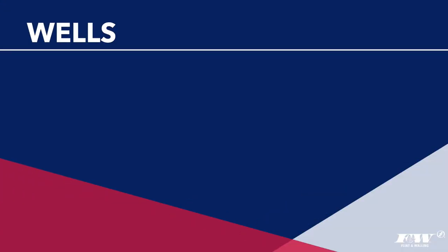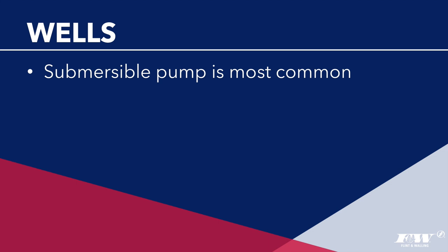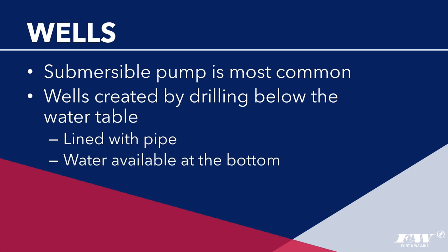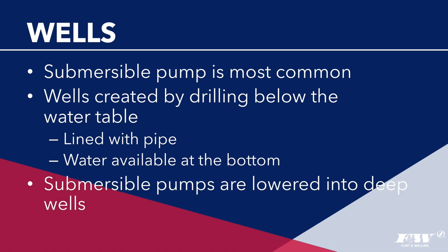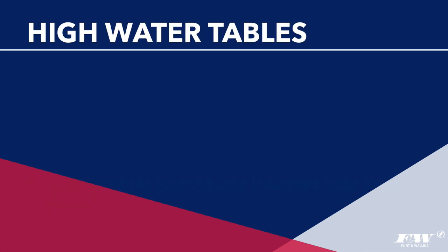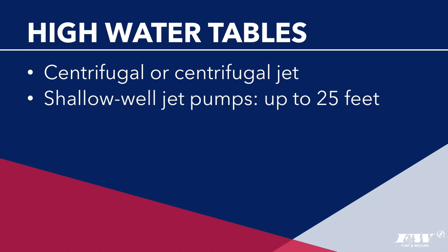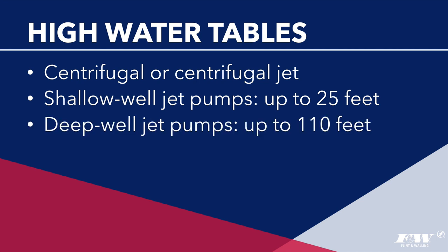If your water source is a well, the most common pump used is a submersible. A well is drilled into the ground to reach below the water table. For deep wells, a submersible pump is lowered down and submerged in the water, pushing it to the surface. For areas with high water tables, you can use a centrifugal or centrifugal jet pump instead. Shallow well jet pumps work for sources up to 25 feet deep; deep well jet pumps can be used for sources up to 110 feet deep.